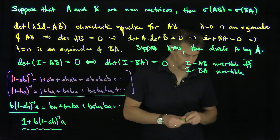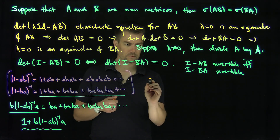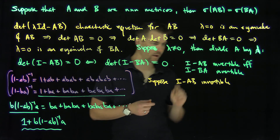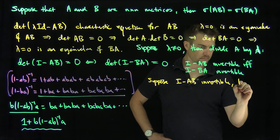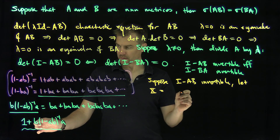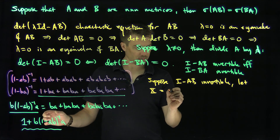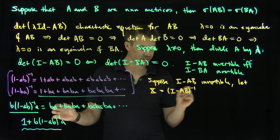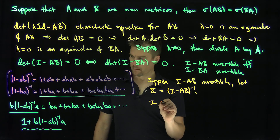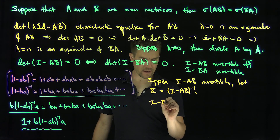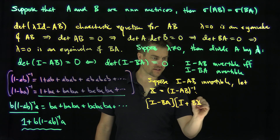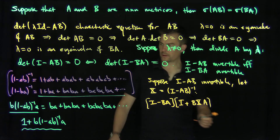So let's finish the proof. Suppose that the identity minus AB is invertible. Let X equal (I minus AB)^{-1}. We consider the matrix identity plus BXA, and we're going to multiply this by identity minus BA to show it equals the identity.